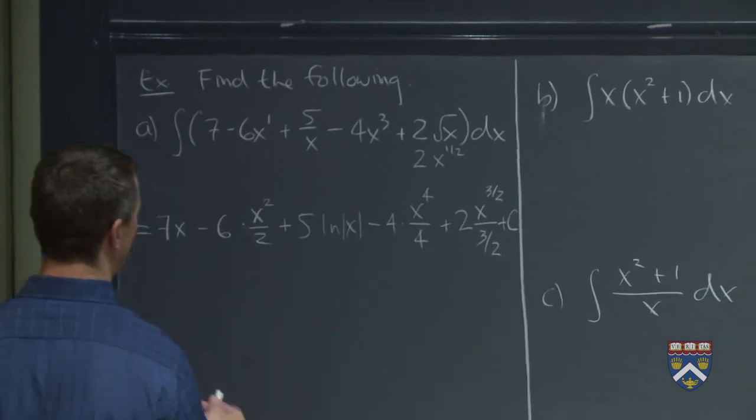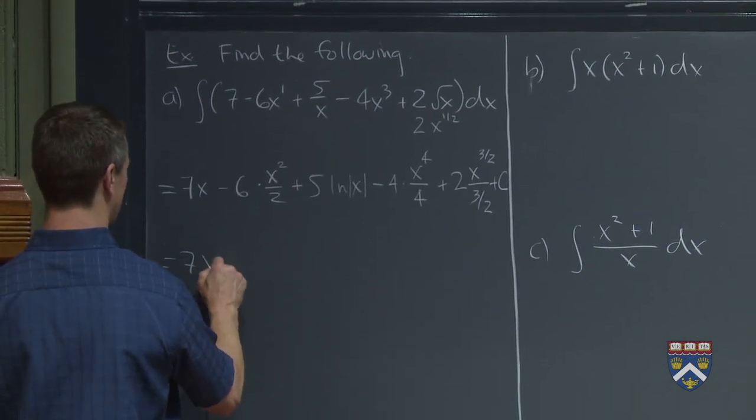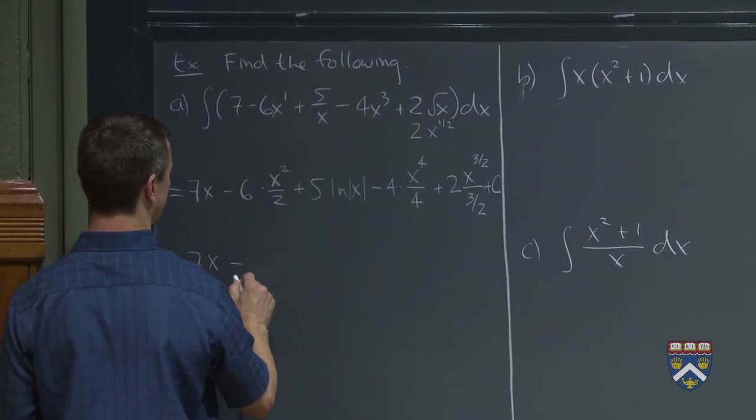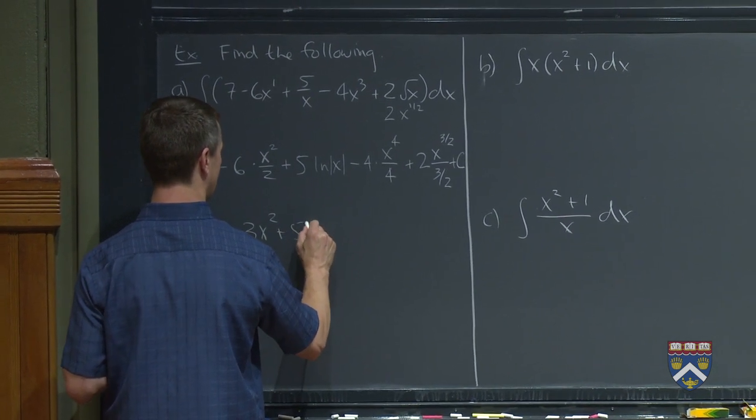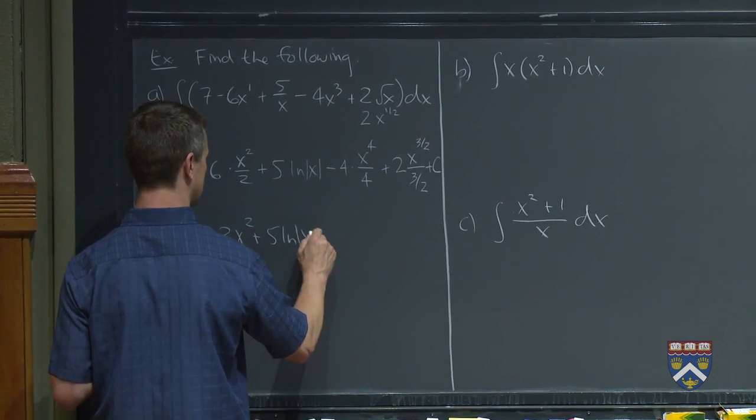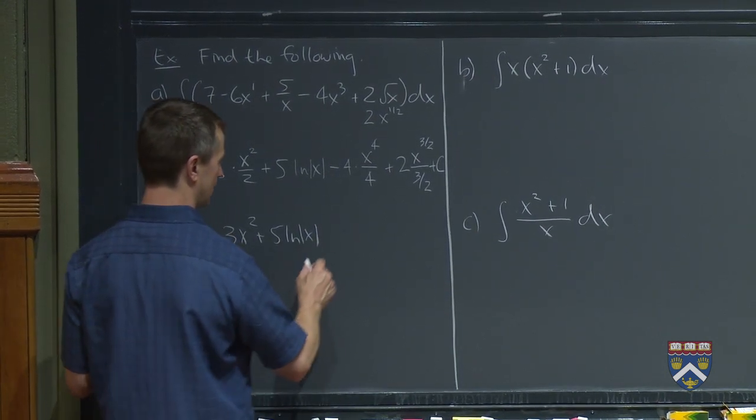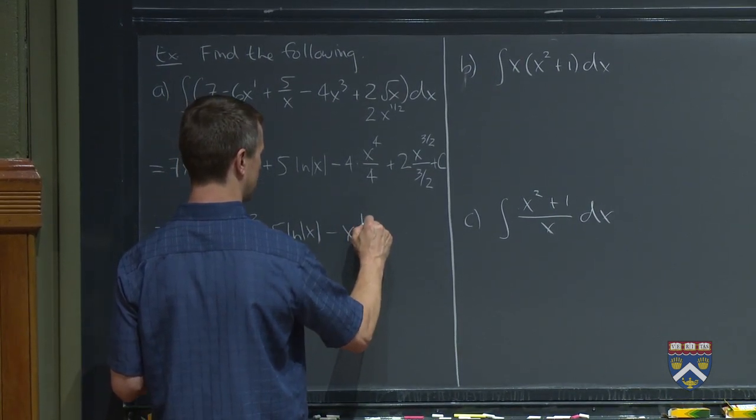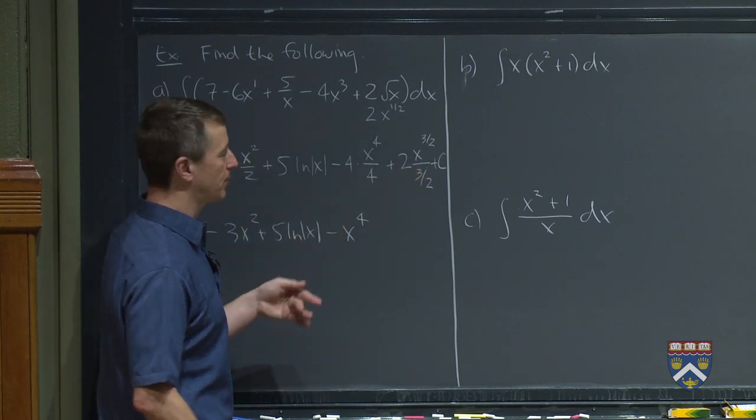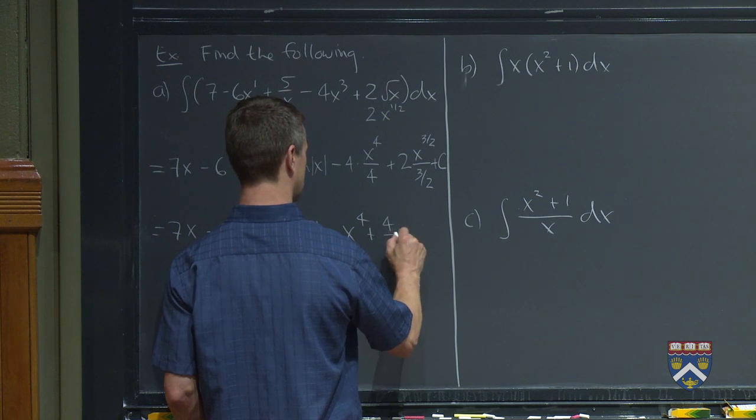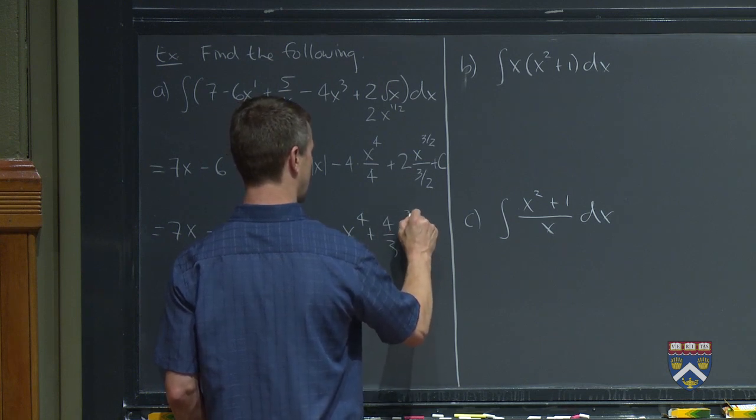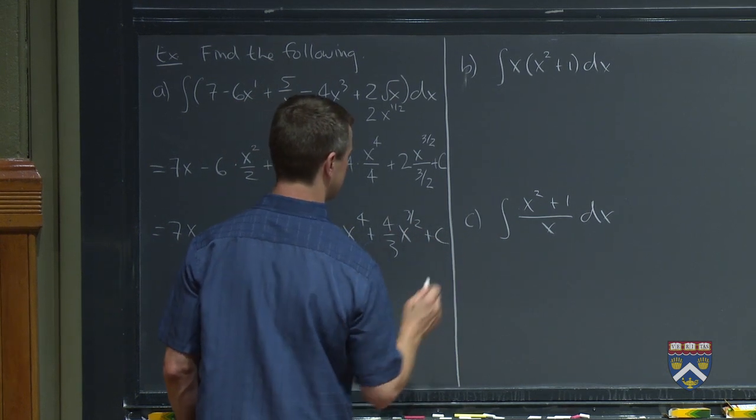And as usual, we don't need to simplify, but we can simplify this. It'll look pretty nice. This will be 7x minus 3x squared plus 5 natural log of absolute value of x. Don't forget that. Minus x to the fourth. And then dividing by 3 halves is multiplying by 2 thirds. So that's 4 thirds x to the 3 halves plus c.